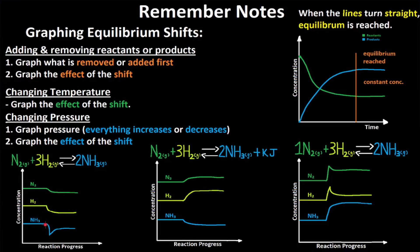For the example where NH3 is removed, graph the decrease first, then graph the effects of the shift. For changing temperature, just graph the effect of the shift — increase temperature, reactants increase and products decrease. For changing pressure, first graph that everything increases or decreases together, then graph the effect of the shift. For this reaction, pressure increases so we graph that first, then graph the effects of the shift.